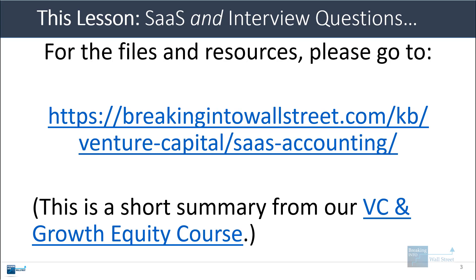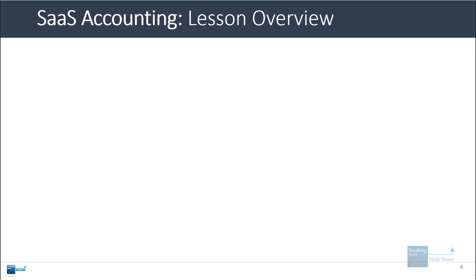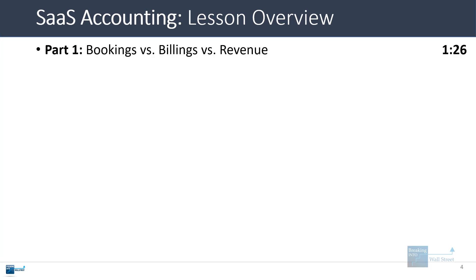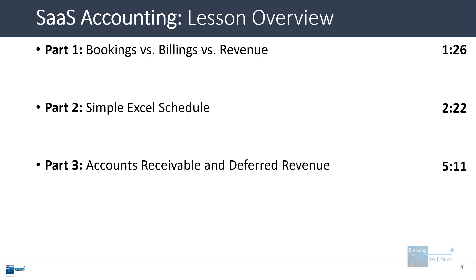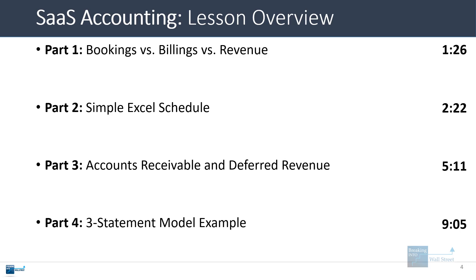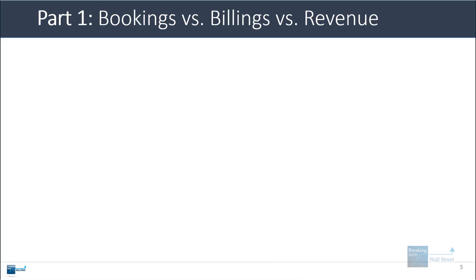This is still a short summary from our more extensive venture capital and growth equity modeling course. I'm going to go through everything here again and also give you an example of SaaS accounting in a full financial statement model. We'll start with the distinction between bookings, billings, and revenue, then a simple Excel schedule, then accounts receivable and deferred revenue — where the mistake was last time — and finally the income statement, balance sheet, and cash flow statement.